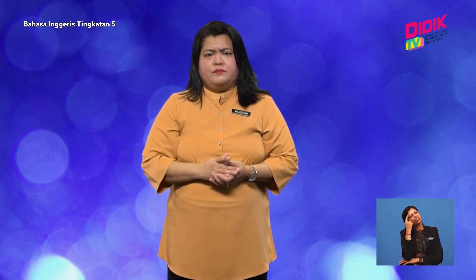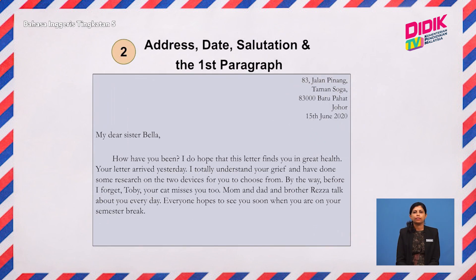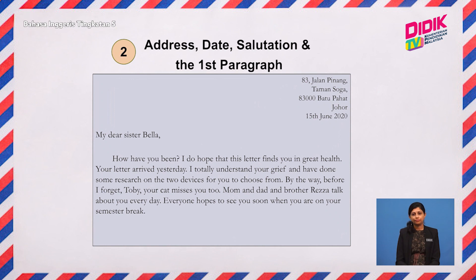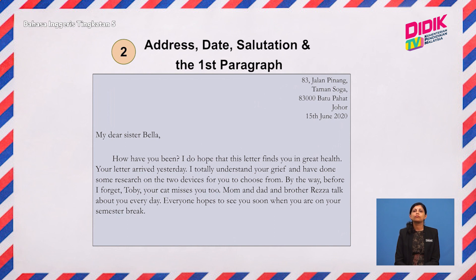Here is how you begin your letter. Don't spend too much time creating an address or choosing a name for your sister. For instance: 'My dear sister Bella, how have you been? I do hope that this letter finds you in great health. Your letter arrived yesterday. I totally understand your grief and have done some research on the two devices for you to choose from. By the way, before I forget, Toby your cat misses you too. Mom, dad, and brother Reza talk about you every day. Everyone hopes to see you soon when you are on your semester break.'